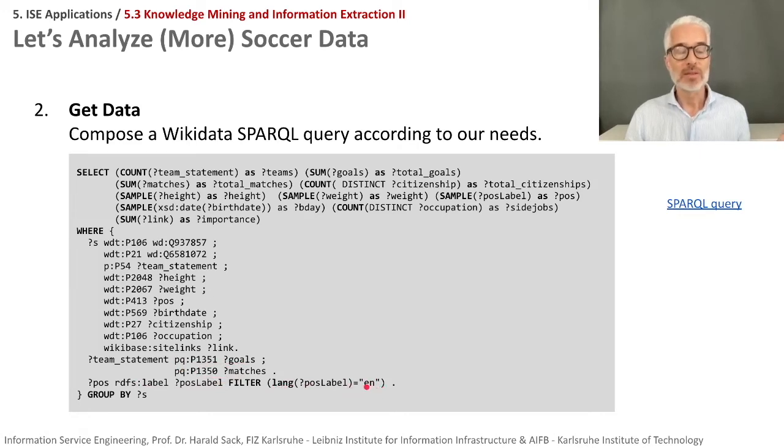Here in the end we filter out of course we want to have the name of the player and we only want to have this name then probably or then no it's not for the player it's for the position played and for that of course we only want to have the English name of the position where the player has played.